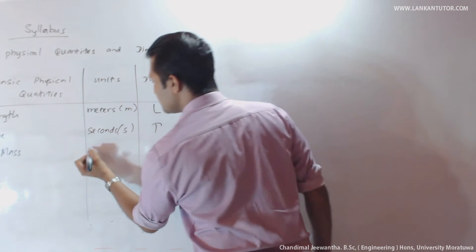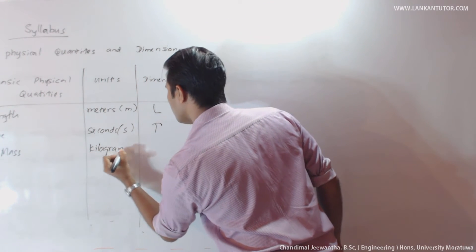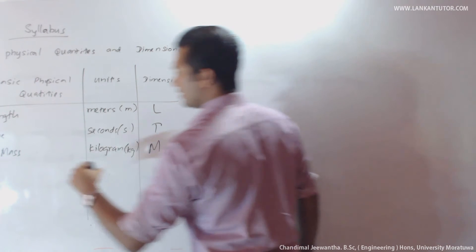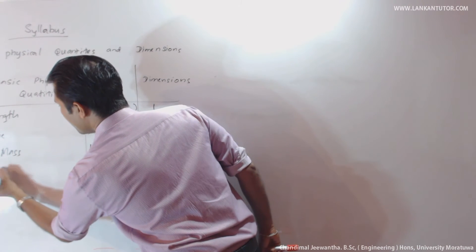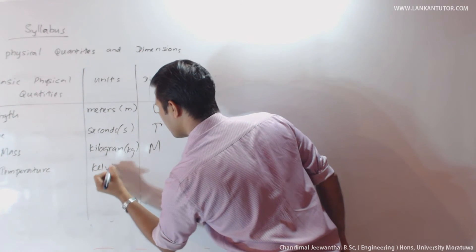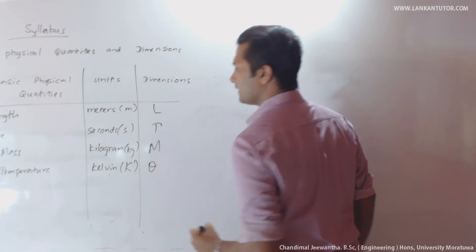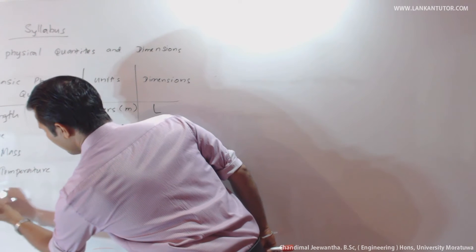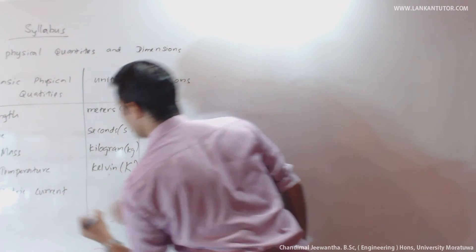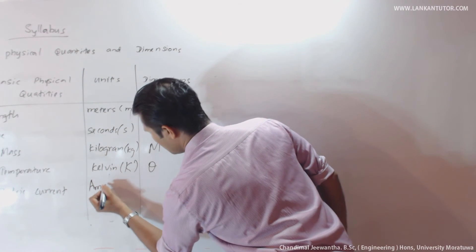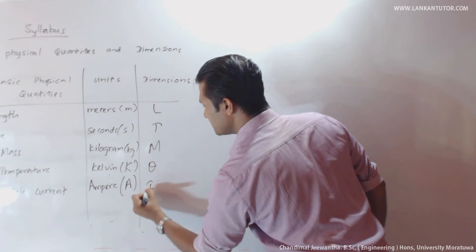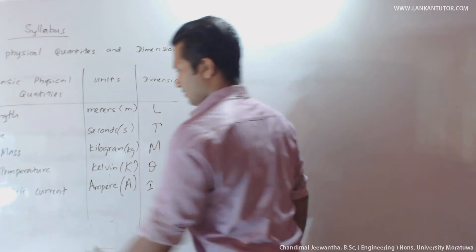The third one is mass. The unit is kilogram, the symbol is 'kg', and the dimension is capital M. The fourth one is temperature, measured in Kelvin — capital K — and the symbol is theta. The fifth is electric current, measured in amperes, symbol capital A, and the dimension is capital I.